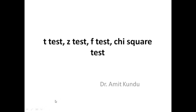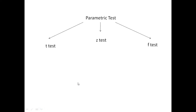What is the t-test? This is a parametric test. Under the parametric test, there is t-test, z-test, and f-test. The t-test tells you how significant the differences between groups are. It lets you know if those differences in terms of the measured mean could have happened by chance.